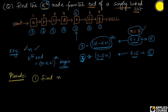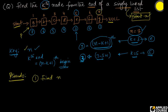When somebody gives me a singly linked list, the input is a pointer or a reference to the first node — that is all they give me. They do not tell me how many nodes are in the list. To find n, I initialize a pointer p to the start and keep traversing one by one, maintaining a counter starting at one, until I find a node whose next pointer is null. That is how I find n — with one traversal. If the list has n nodes, this takes O(n) time.